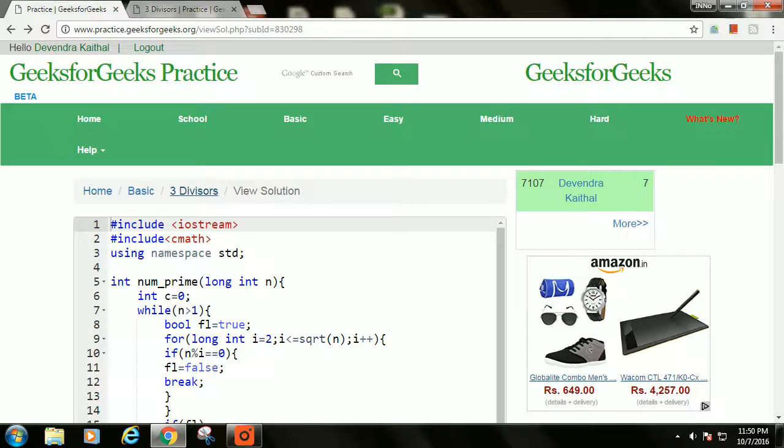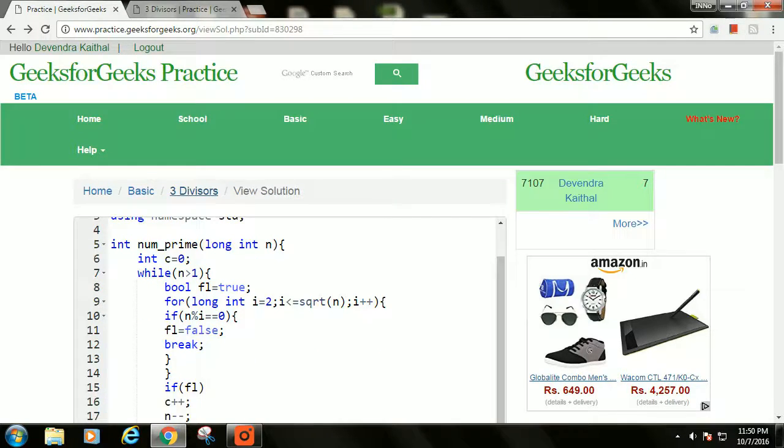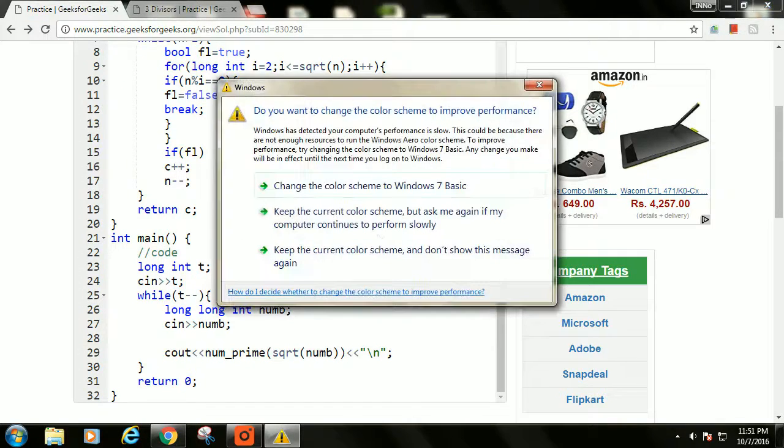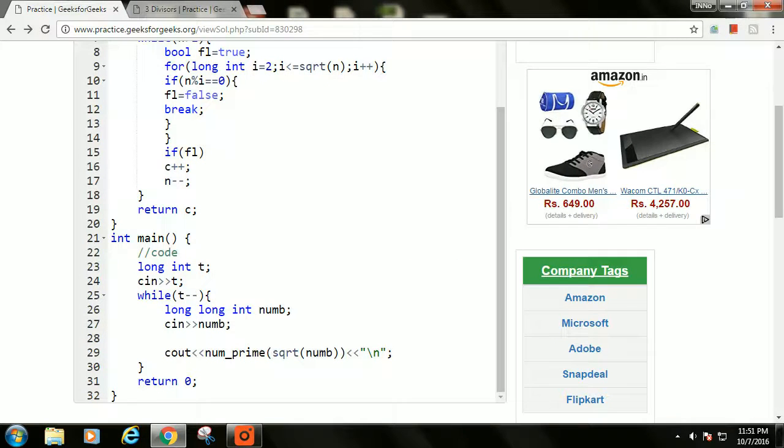This is the function which finds the number of primes that are less than n. What I am doing here is finding the number of primes that are less than or equal to square root of the number that is given in the question. Why am I finding the square root and taking the number of primes less than or equal to the square root? Because as we know, n square is always less than n plus 1 whole square.